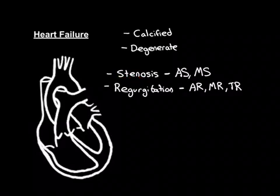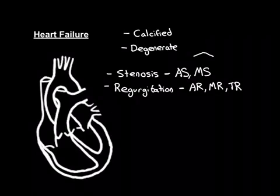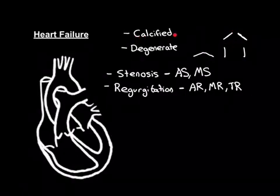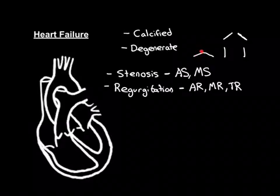Stenosis means that the valve is no longer able to open properly. It's supposed to be closed at rest and fully open when needed. But if the valve becomes stiff — due to calcification of the leaflets making them rigid and less mobile — it can only open partway. That smaller opening makes it much harder for blood to move through.